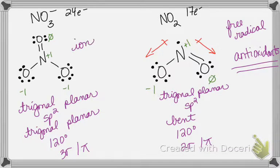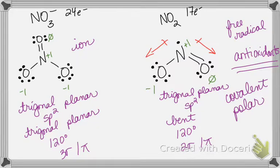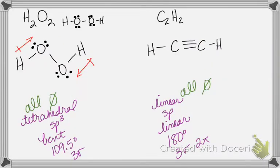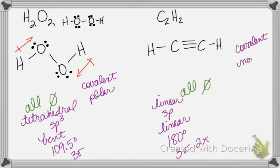Nitrate is an ion. Nitrogen dioxide is covalent and polar — it's not symmetrical because it's bent, and bent molecules are always polar. Hydrogen peroxide is covalent and polar — it's a bent molecule. Acetylene (C₂H₂) is a covalent molecule and it's nonpolar — no dipole arrows, just carbons and hydrogens, which is always a nonpolar compound.